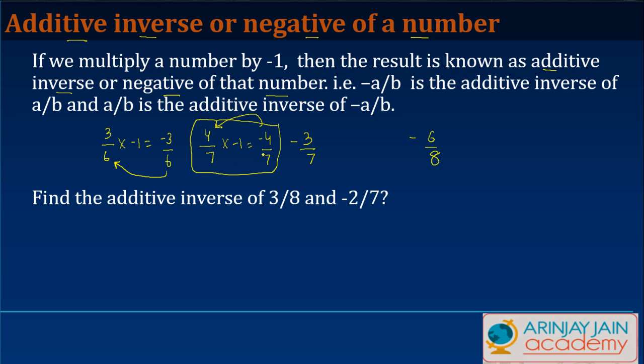But what about if this number is negative itself? So -3 into -1 gives you 3/7. So what I got is a positive number, but this positive number is called the negative of -3/7.